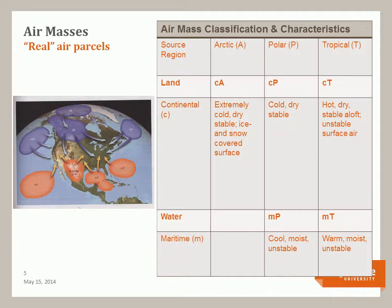Air masses are defined by their source region and humidity and temperature values. On land, air masses are referred to as continental and can form in the Arctic — extremely cold, dry, and stable — polar areas — cold, dry, and stable — or tropical areas — hot, dry, and stable aloft but unstable at the surface.